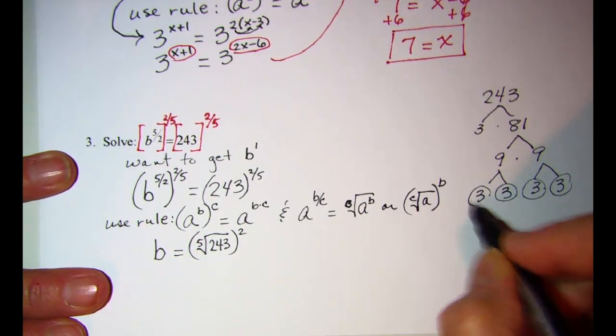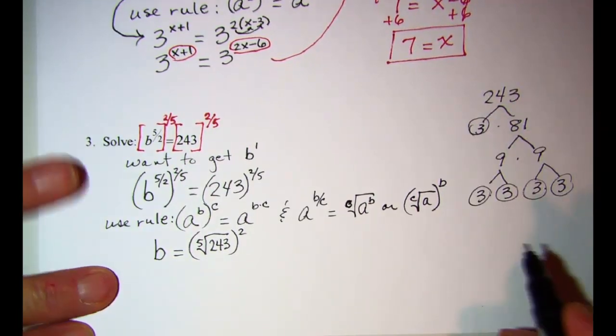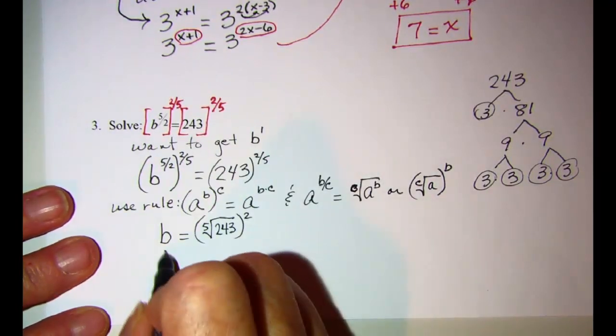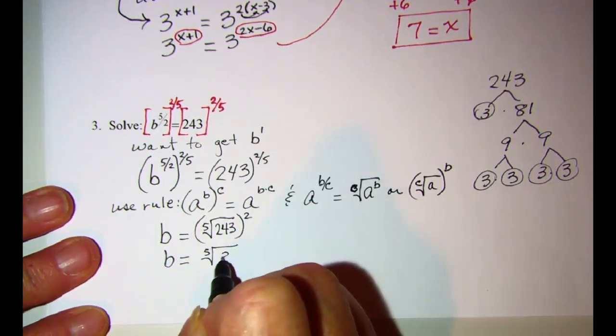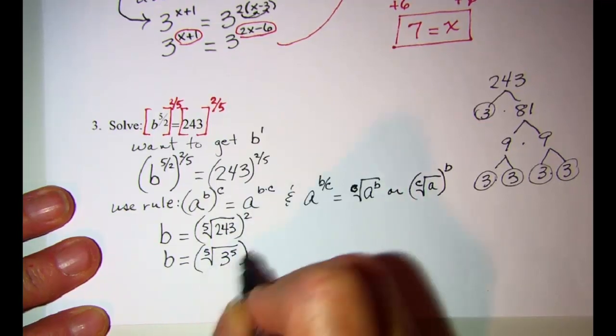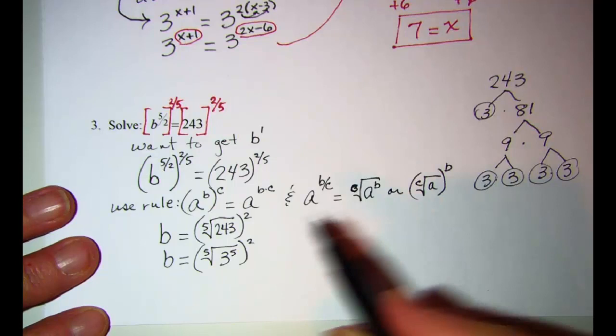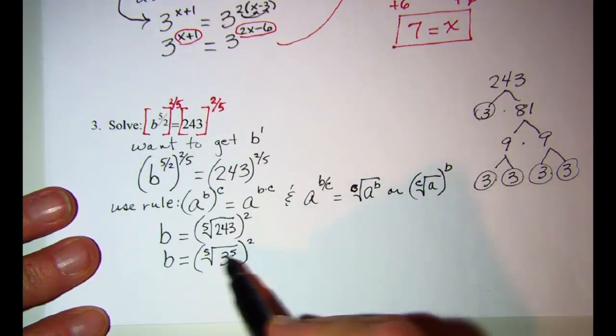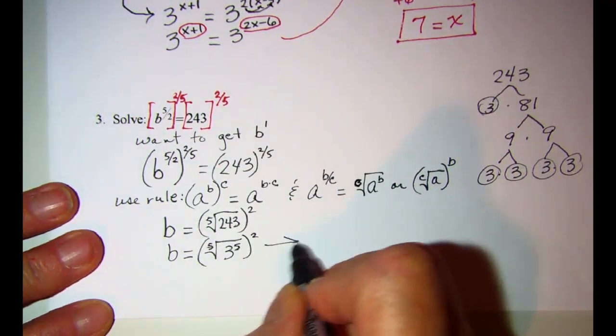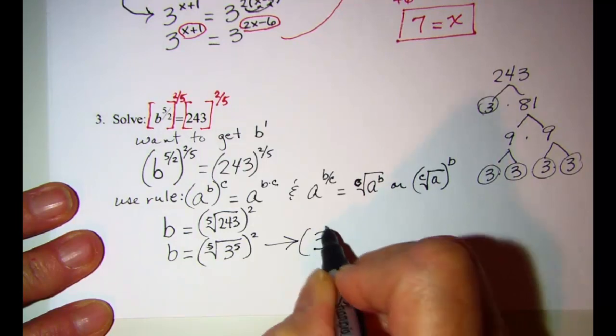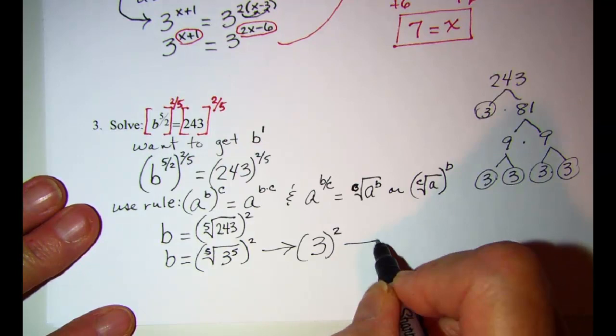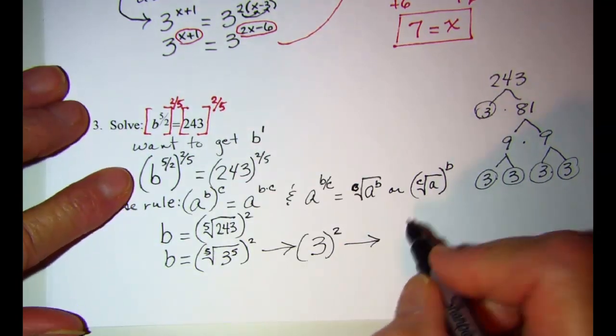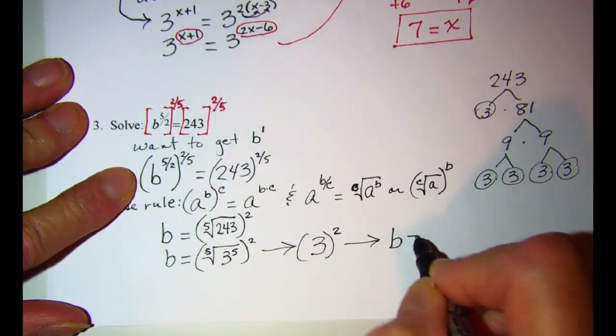So I have 1, 2, 3, 4, 5 factors of 3. So this is the fifth root of 3^5. The fifth root of 3^5 is just going to be 3, and then that is squared. So our answer for this function is b = 9.